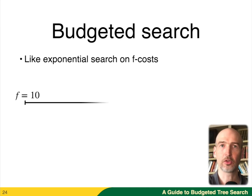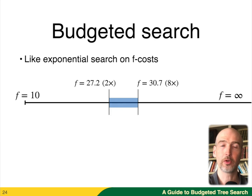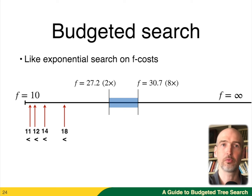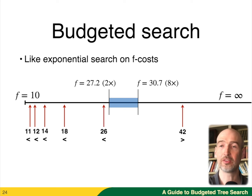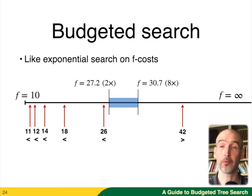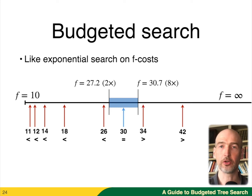Let's set up the same problem. We know F cost 10 gives 100 nodes, so we're looking for something between 200 and 800. We sample F costs 11, 12, 14, 18, 26 — all less than the bound. We sample 42, which is greater than the bound. When we sample this, we're actually doing a depth-first search bounded by F cost 42, which will terminate when we hit 800 node expansions. Then we do a binary search until we find the F cost that falls within the final window we want.